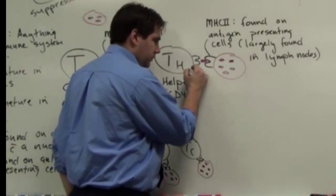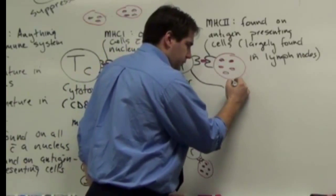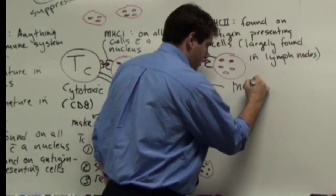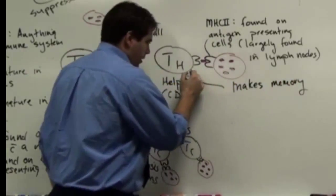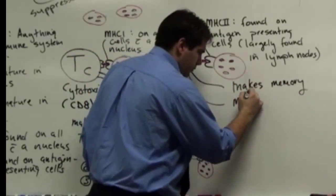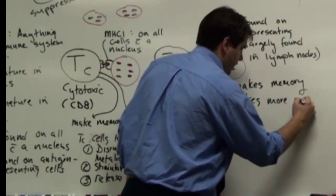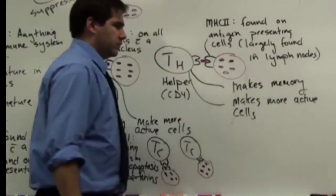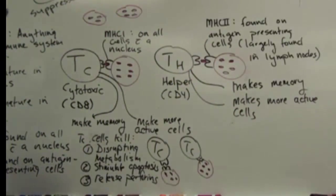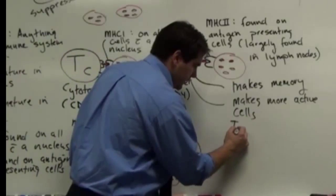And so when it finds this target, it does two things. It makes memory. It also makes more active cells. So you've got additional TH cells now.